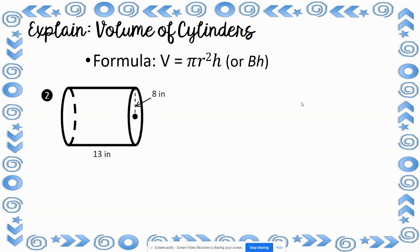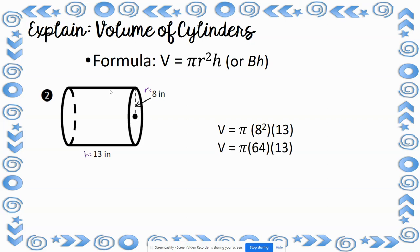For number 2, the radius is 8 and the height is 13. Don't get confused just because this cylinder is tilted — the base is still the circle, and the height is still the distance connecting one circle to the other. Plugging into the formula: pi times 8 squared times 13. 8 squared is 64; 64 times 13 is 832. Using 3.14 for pi, 832 times 3.14 gives 2,612.5 inches cubed.